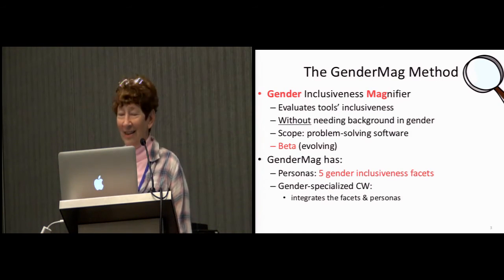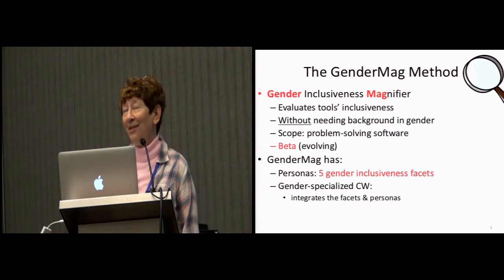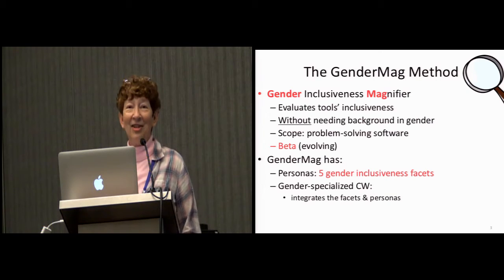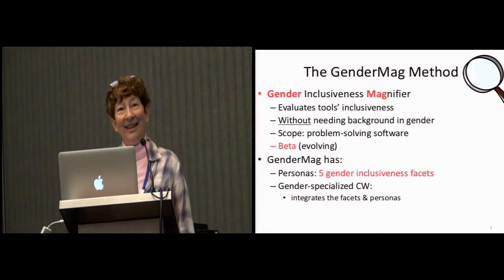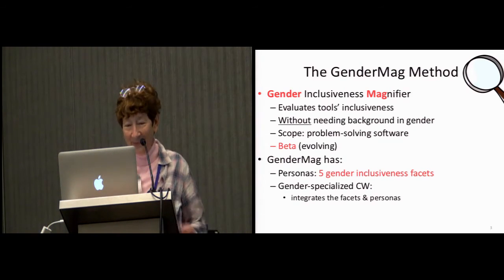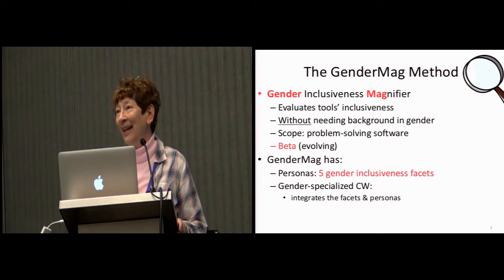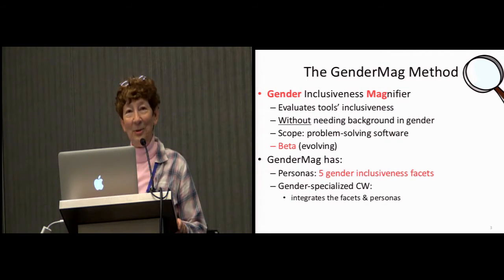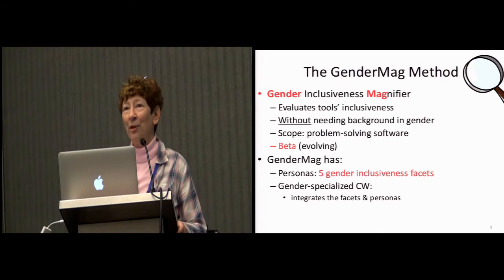Classic examples include debugging tools, decision support software, spreadsheets — anything where the user is thinking and thinking, trying to figure something out, and using software as part of that process. We've since found out there's one other kind of problem solving it also works on: when the user is trying to solve a problem that arose because they're just trying to use the software. GenderMag is pretty good at finding issues that happen that way too. It's in beta — a continually evolving method. In fact, a new downloadable version was uploaded just this morning; we update it about every two to three months.